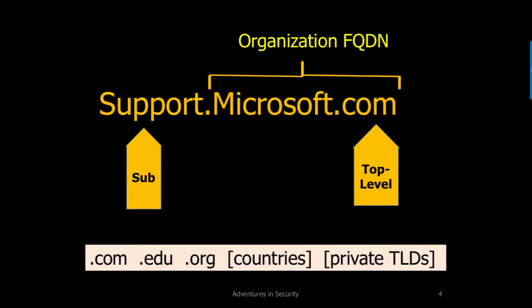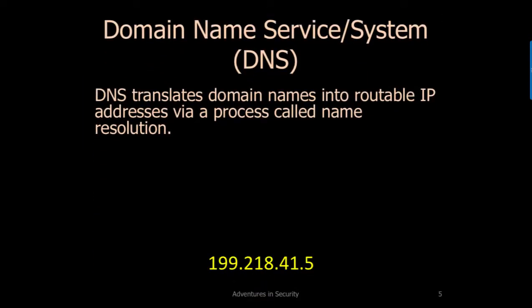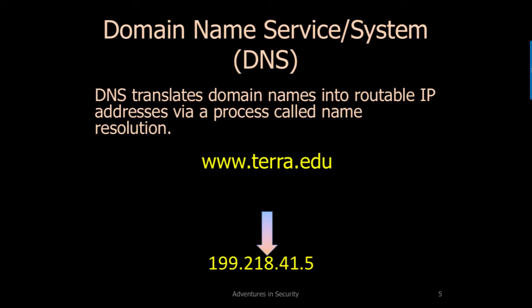But we have a problem with domain names. Routers that direct traffic across the Internet do not know where Microsoft.com or any other domain resides. They only understand IP addresses. This is the reason we need DNS. DNS converts the domain name to an IP address, so the Internet services can find and establish sessions with websites. Here, terra.edu would be resolved by DNS to 199.218.41.5. One more thing: www was frequently appended to the front of domain names in the past, however this is not really necessary. www can be used, but it's actually just another subdomain.